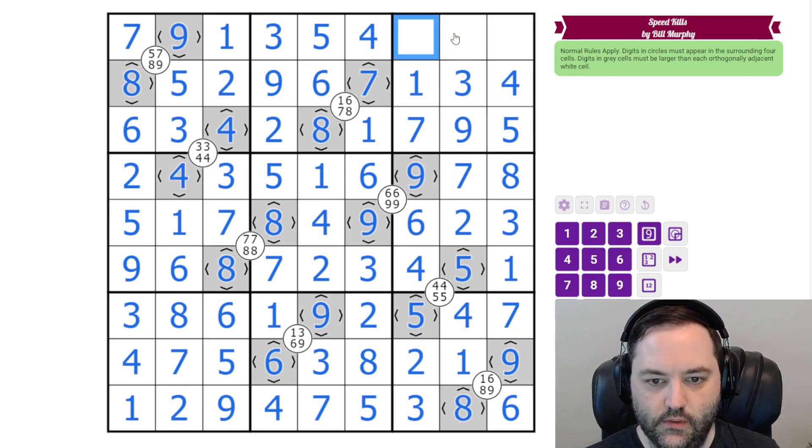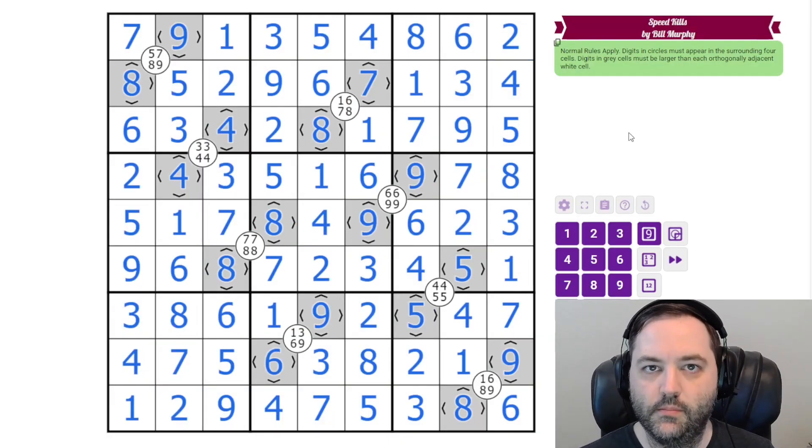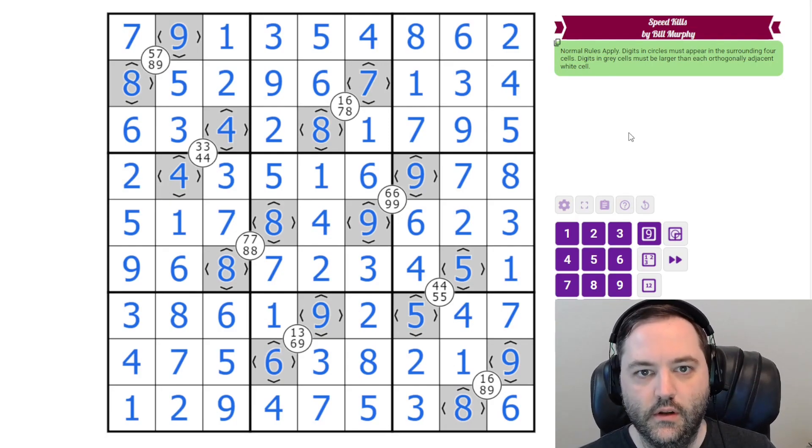And finally 2, 6, and 8. It's going to be 8, 6, 2. And that is how you solve Speed Kills. Hope you found that okay. Let us know how you did in the comments.